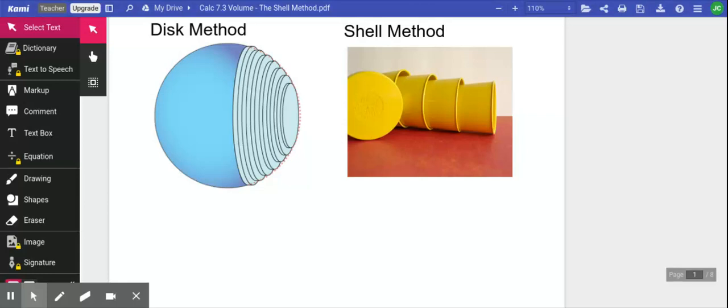In lesson 7.2, we talked about the disk method for finding volumes of solids, things that we were rotating.